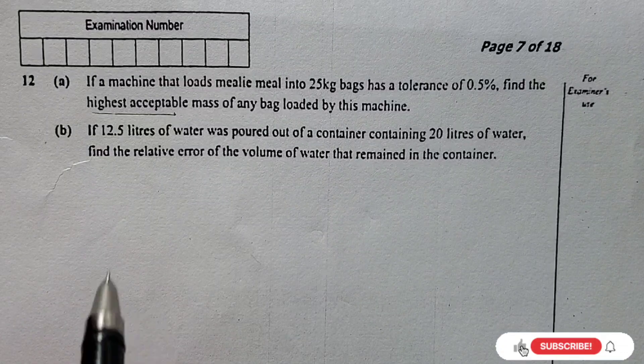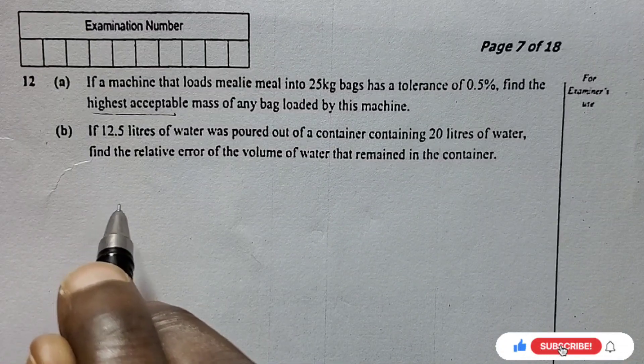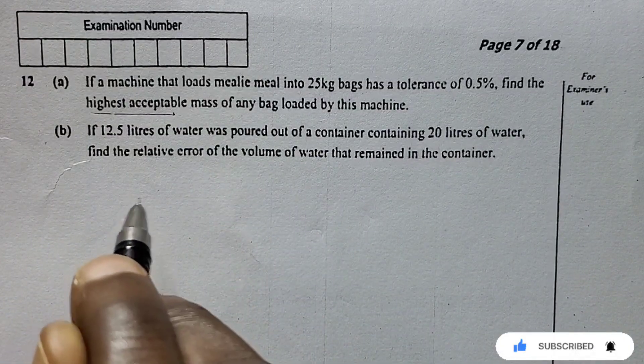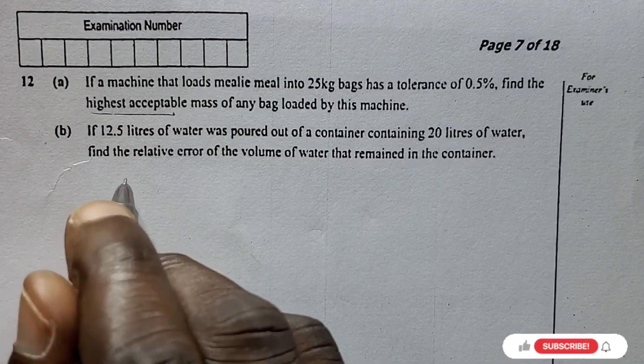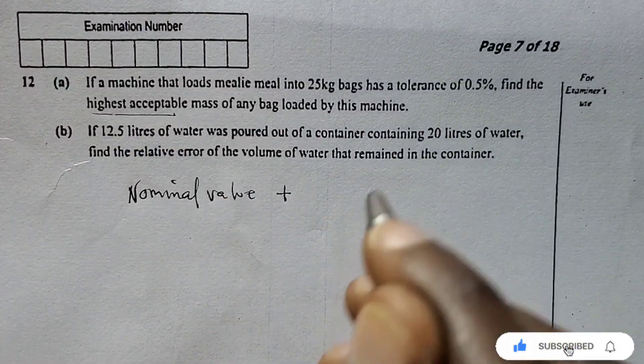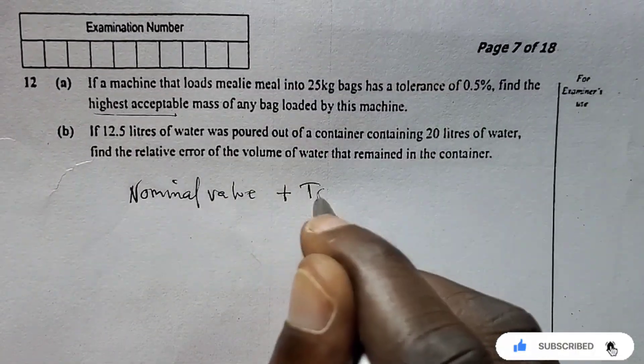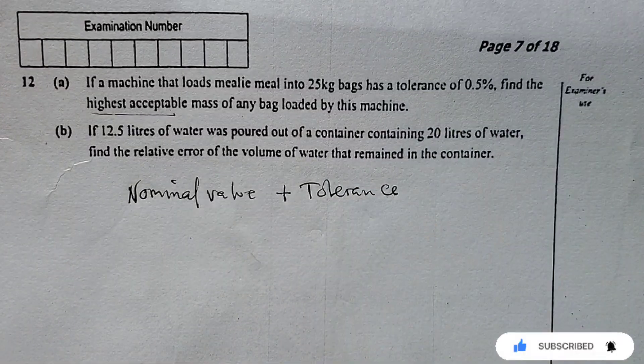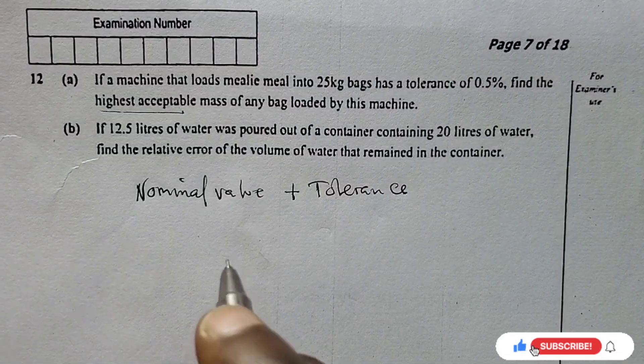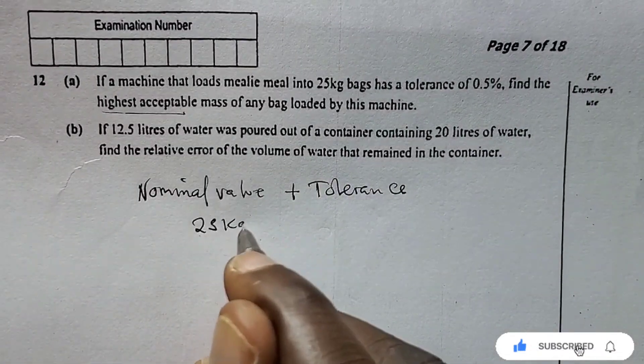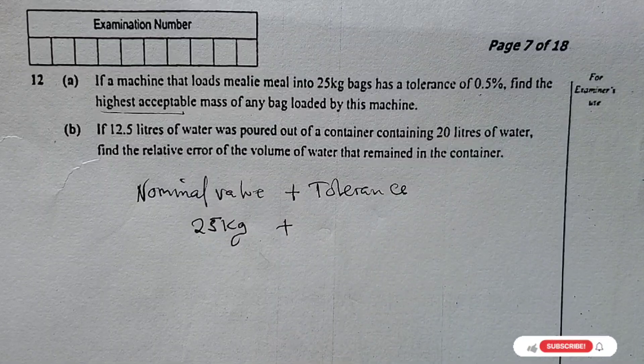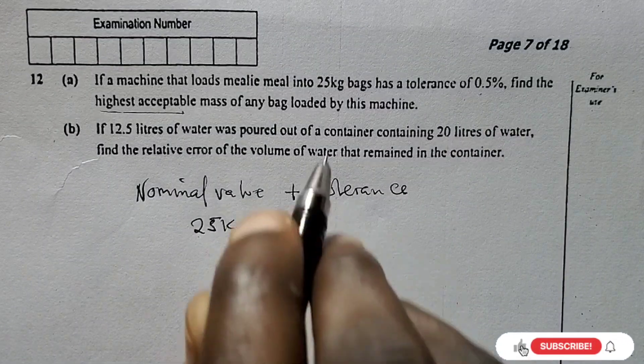What you need to do is use the formula for calculating the highest acceptable value: the nominal value plus the tolerance. The nominal value is 25 kg. The tolerance is given in percentage, but we don't want it in percentage, we want it in kg.